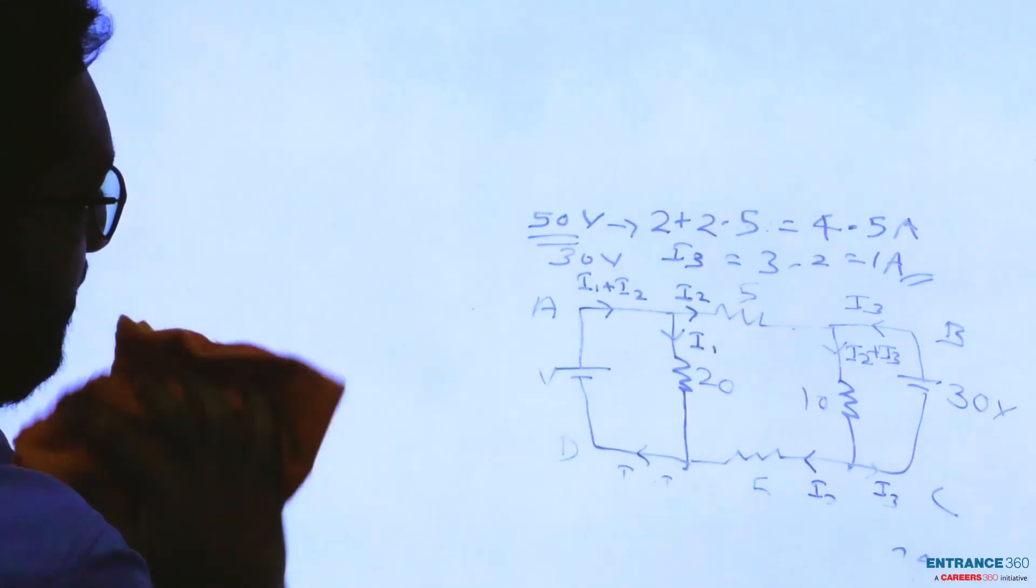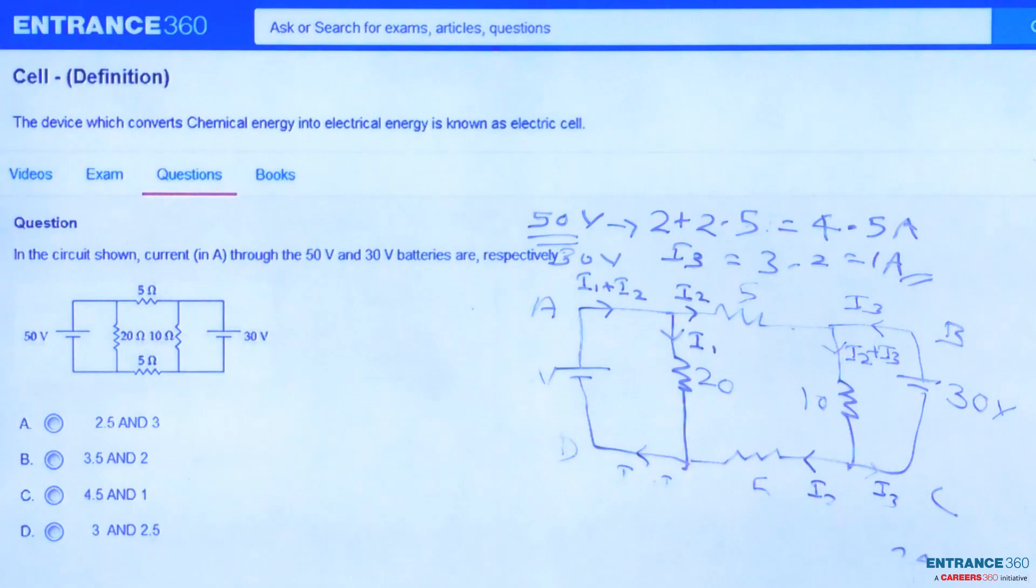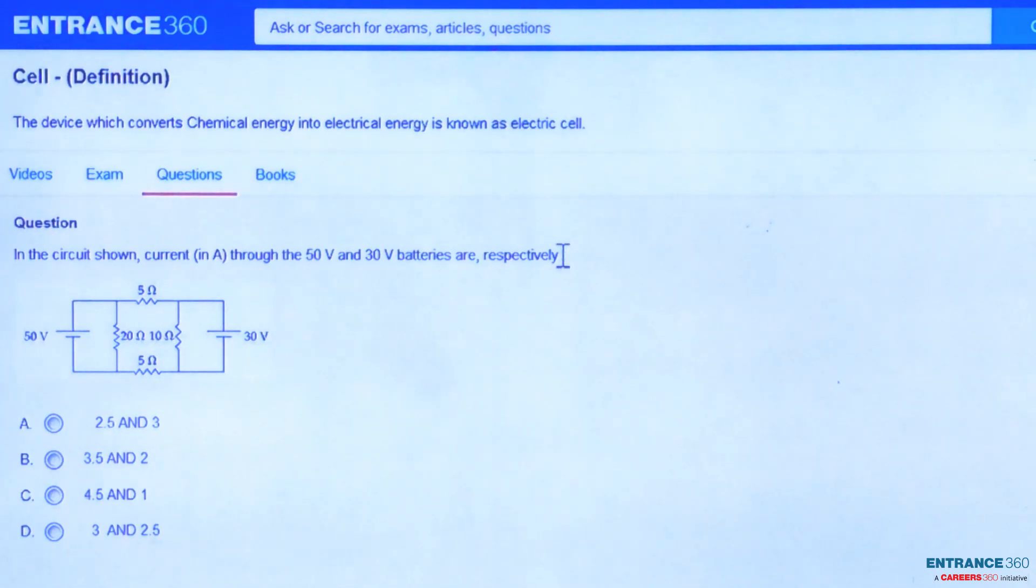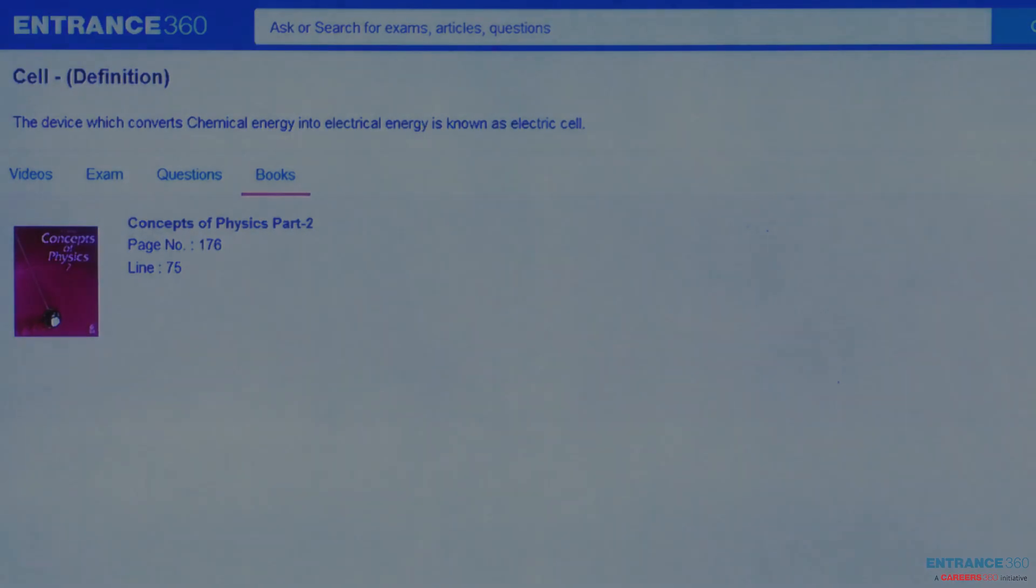Let's check the options. Looking for 4.5 and 1 ampere, it is our option C, so the right answer is C. To get more questions you can scroll here, and you can get the concept from the book Concept of Physics Part 2, page number 176, line number 75. Thank you.